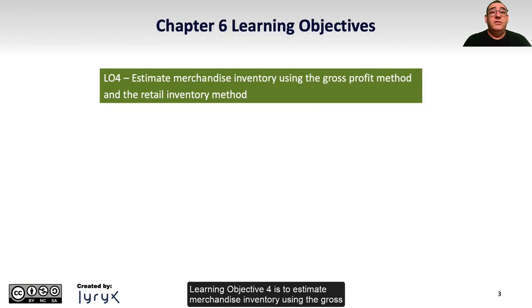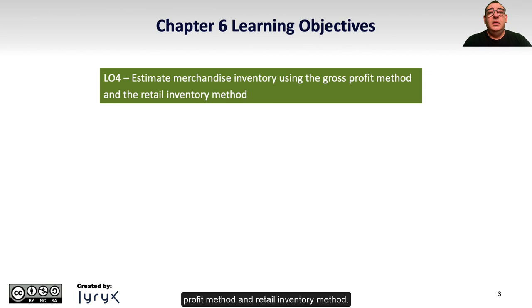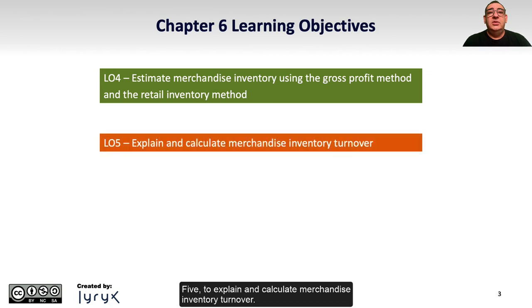Learning Objective 4 is to estimate merchandise inventory using the gross profit method and retail inventory method. Learning Objective 5 is to explain and calculate merchandise inventory turnover.